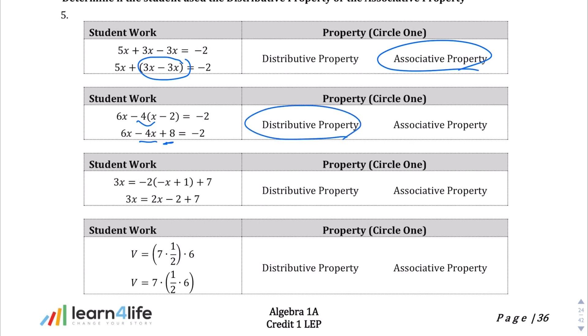The next box there, we have the student work. It looks like they distributed that 2, and again, distributive property. And lastly, the next box, we are just regrouping those. 7 times 1 half times 6, and you can group that first half together or the first two terms together or the second terms together. It doesn't really matter since you're multiplying. That's not the distributive property. That is the associative property.